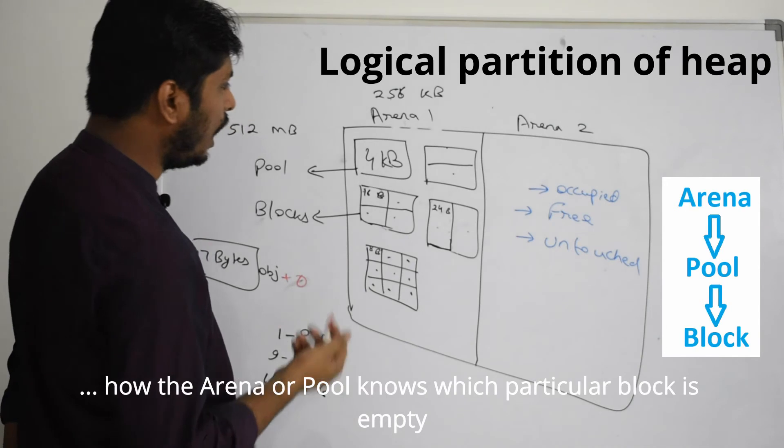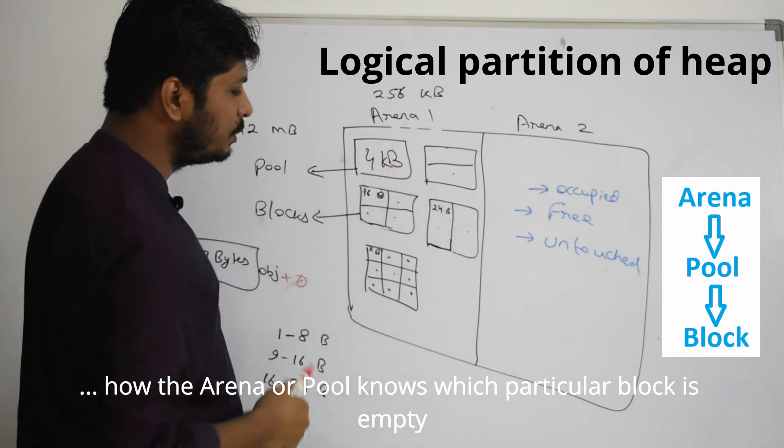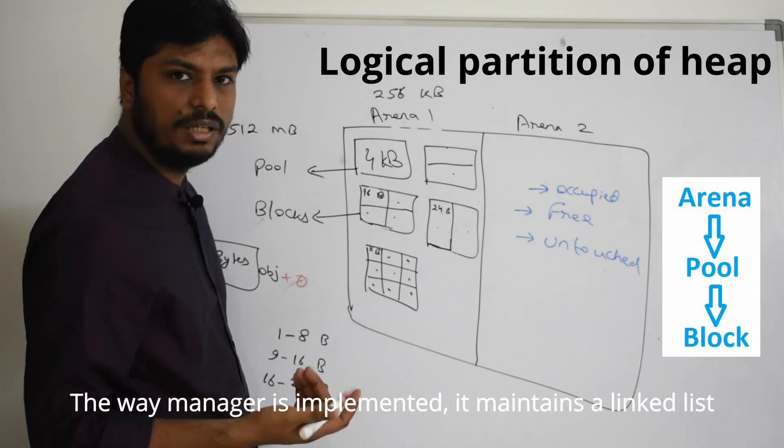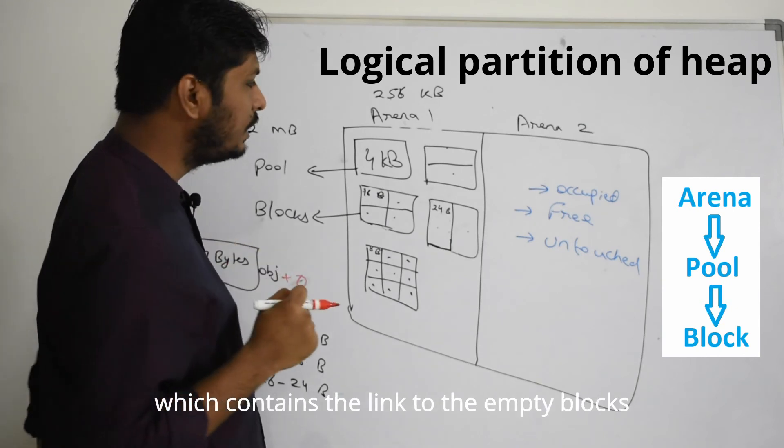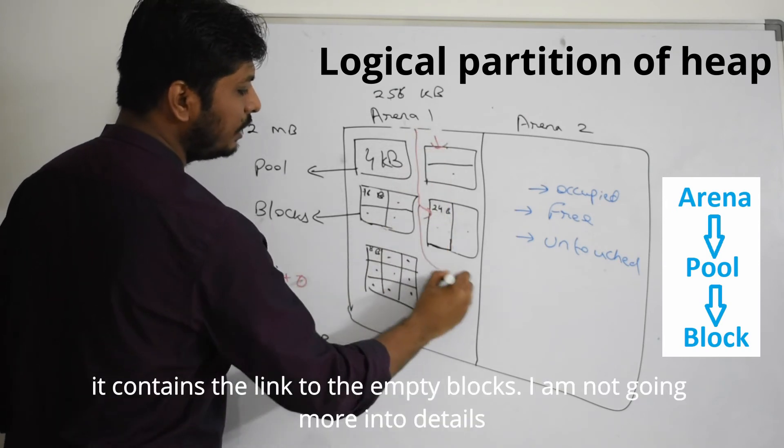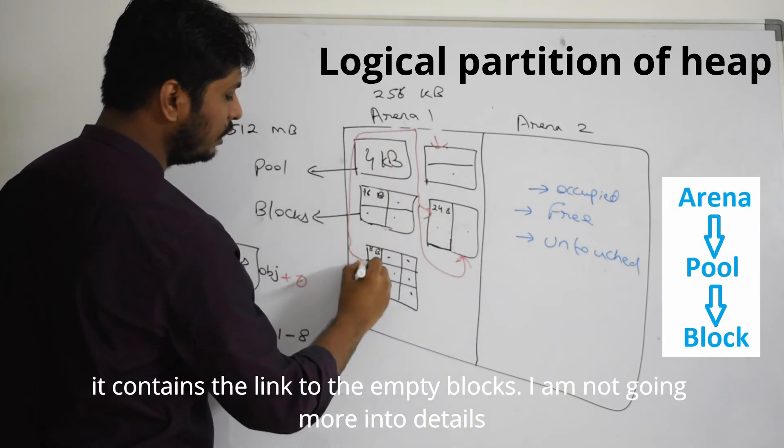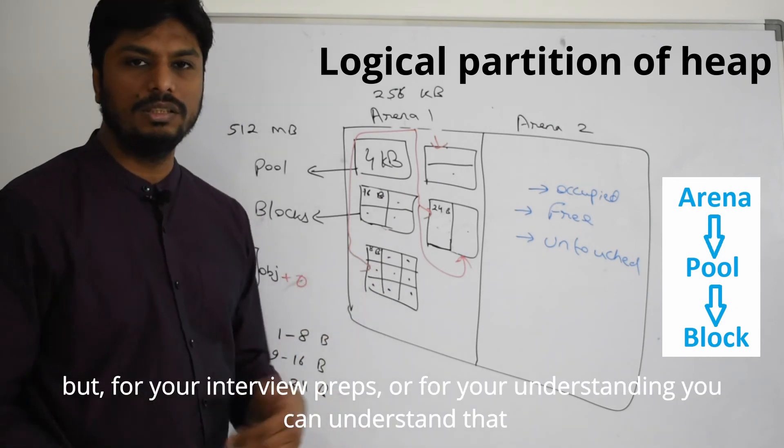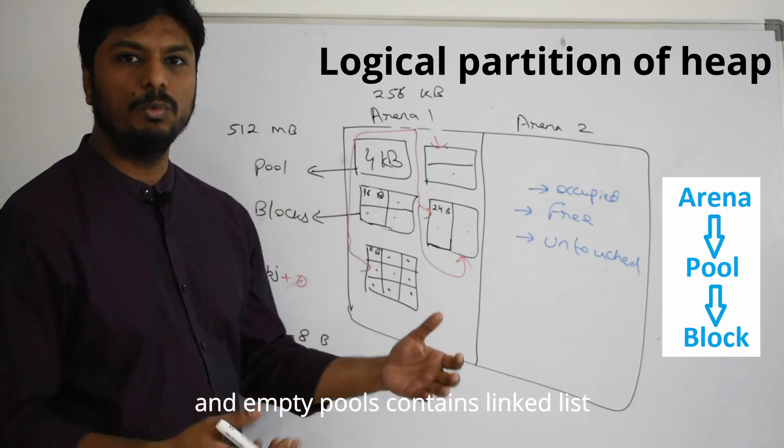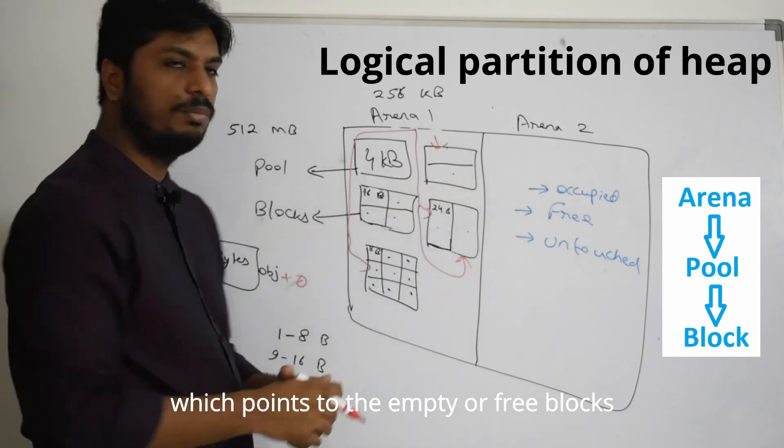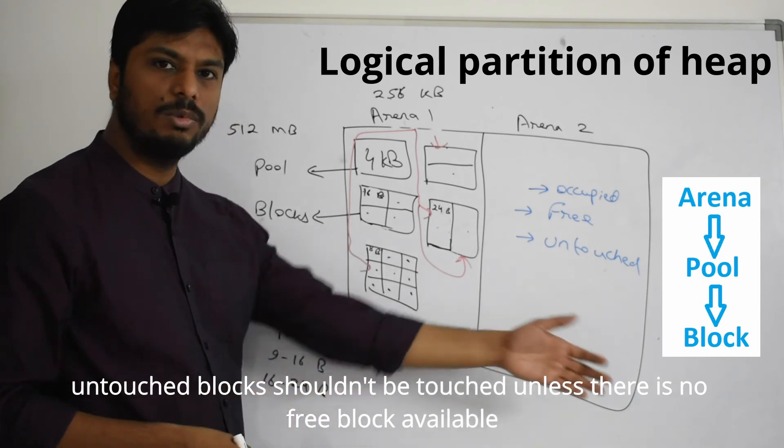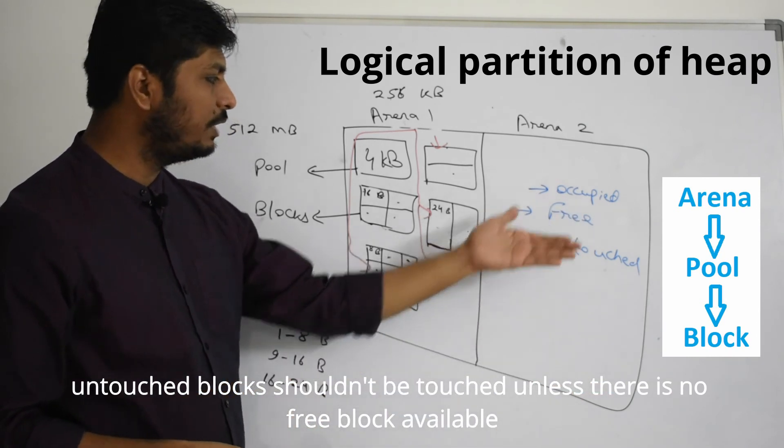That is one important part, how it manages the memory. Another important part is how the arena knows or how the pool knows which particular block is actually empty. The manager maintains a link list which contains the links to the empty blocks. Arena contains a link list to the empty pools and free blocks. And untouched blocks should not be touched unless the free blocks are also occupied.